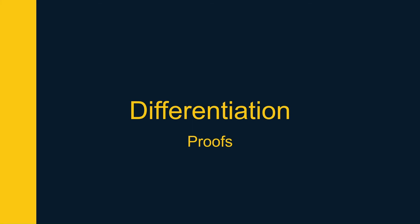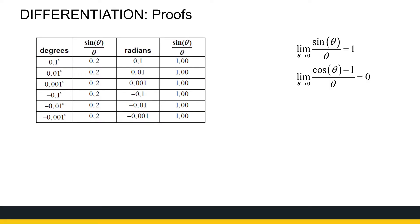Before we can look at why the derivative of sine of x is cosine of x, we need to talk about radians and degrees quickly. What we're after is the limit as theta approaches zero of sine theta over theta, because we're going to need that for our proof that the derivative of sine of x equals cosine of x.